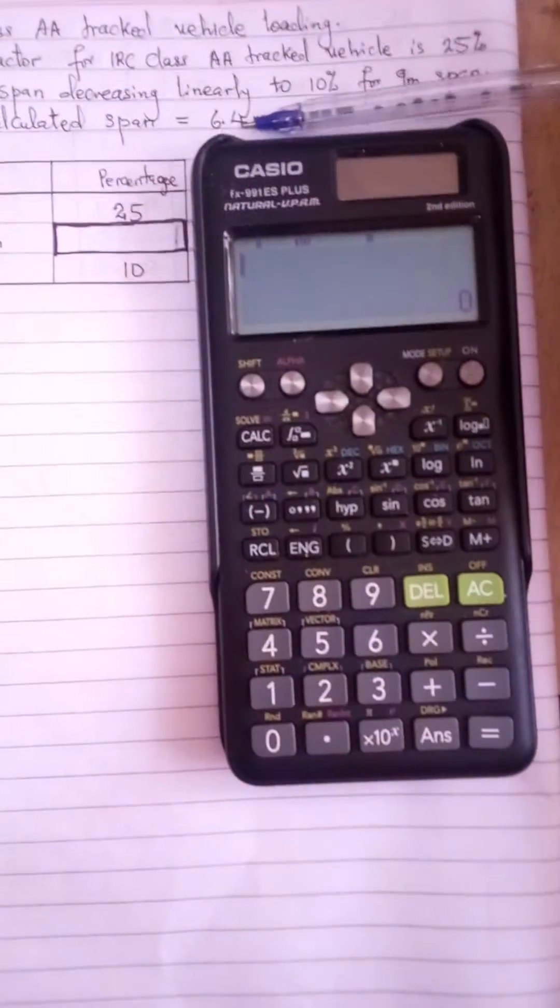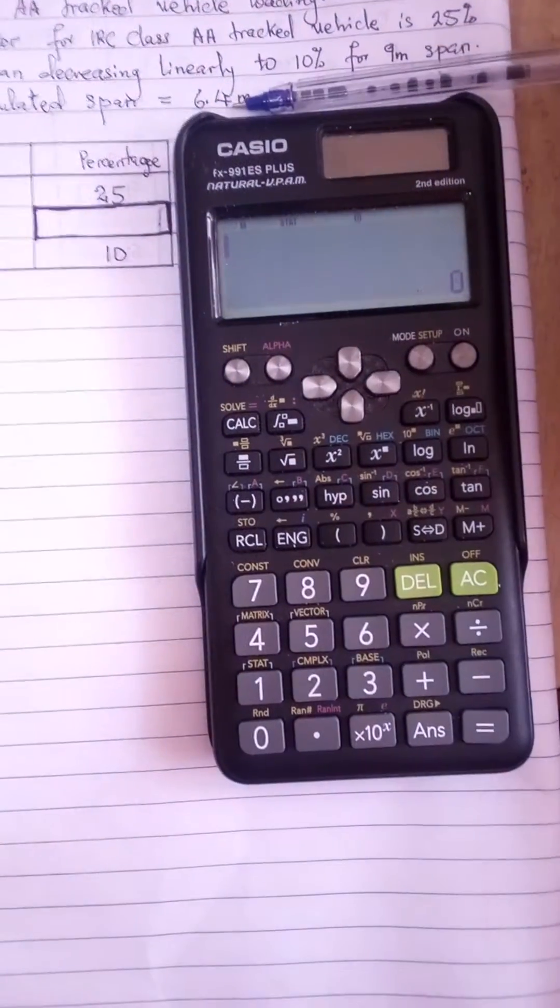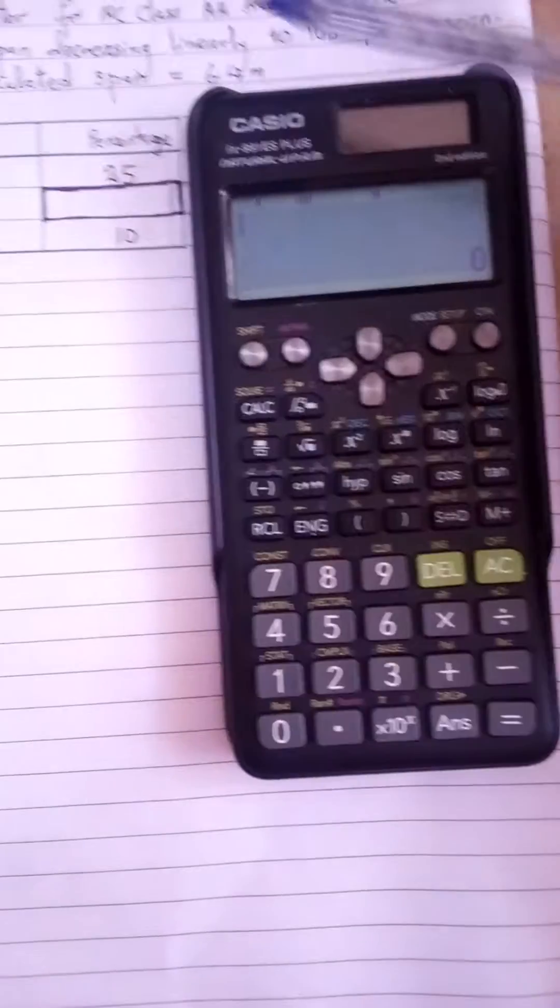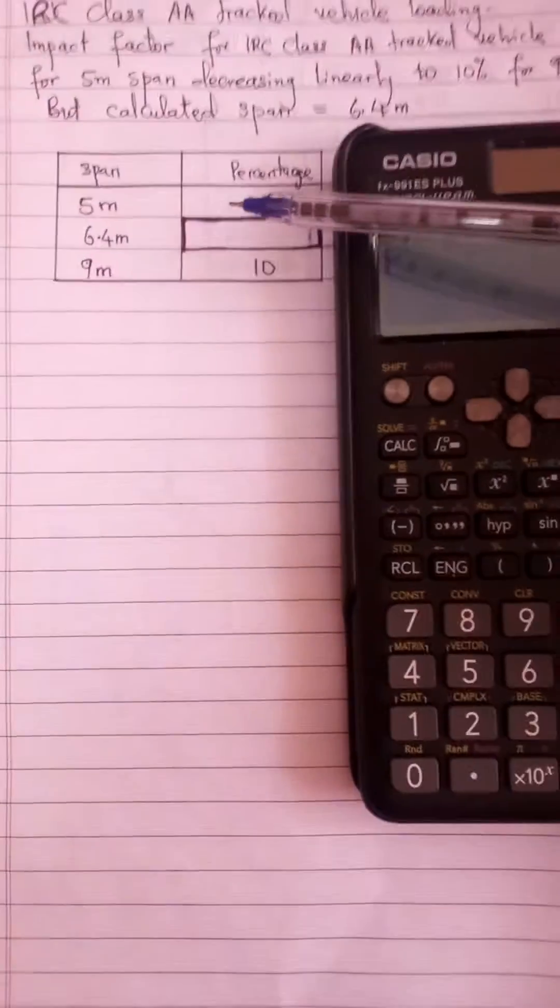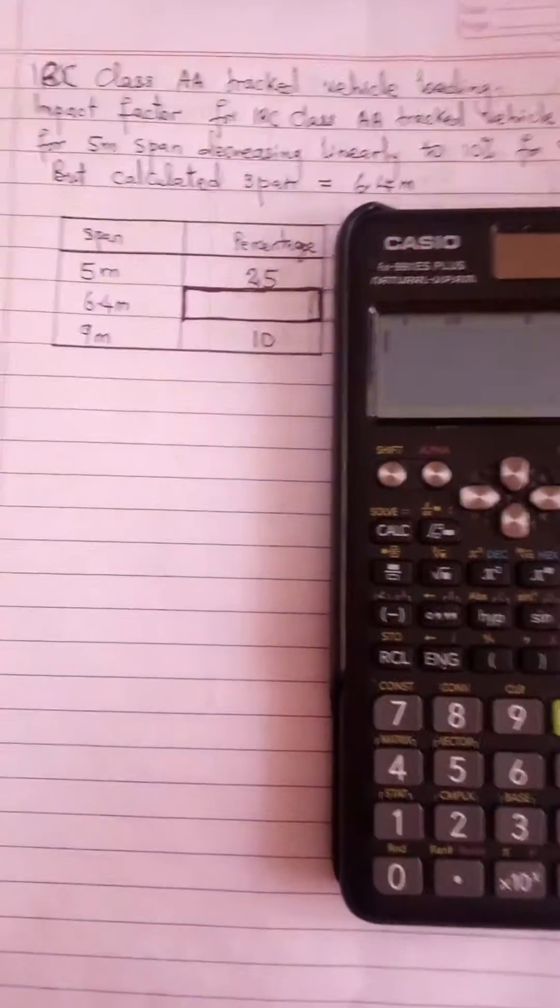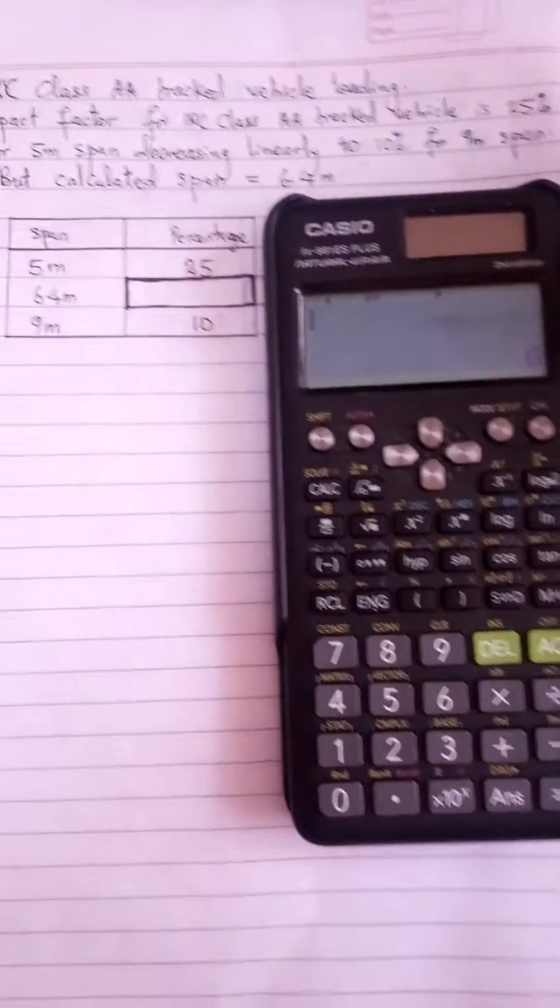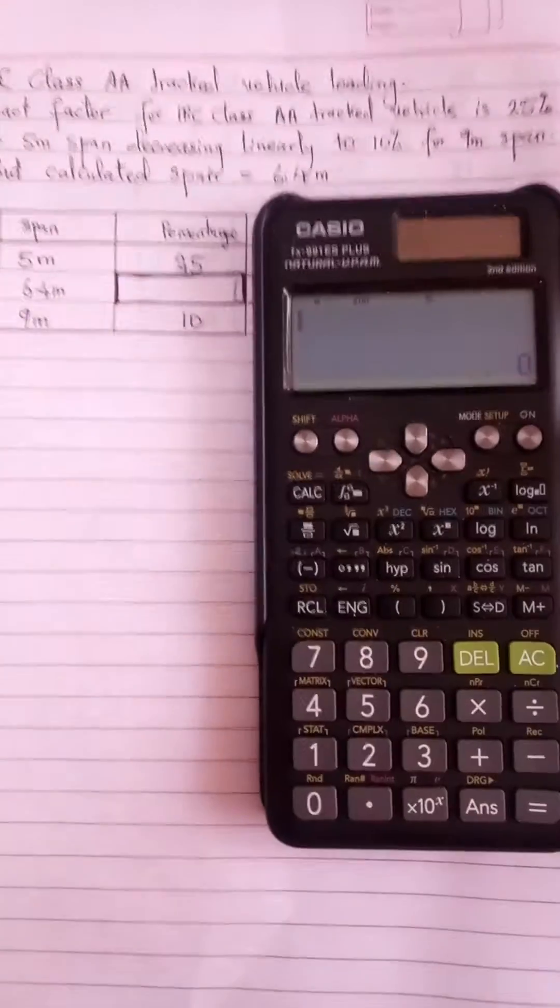From this statement, how do I now get the percentage for 6.4? I realize that I'm going to use interpolation. If you know how to use it with a calculator, it's going to be very easy rather than doing the long calculation, so I want to show people how this is done using calculator.